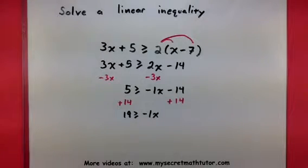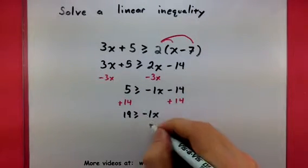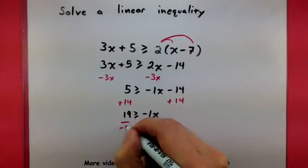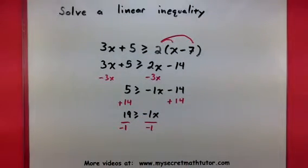All right, now we want to make sure that x is completely alone on one side, which means I've got to find some way to get rid of this negative 1. No problem. We will divide both sides by a negative 1 and then continue. Now remember, if you ever divide or multiply by a negative number, this is the situation where we flip that sign.